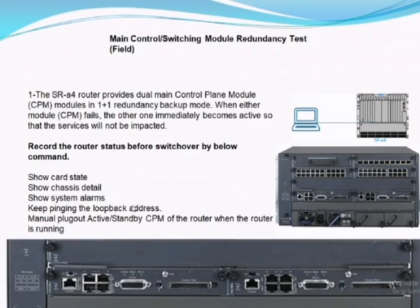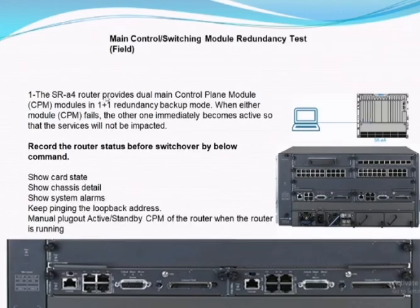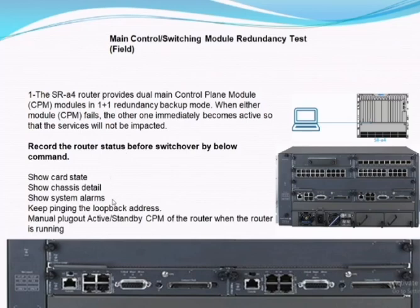It performs signal flow and processing functions for the whole router. We start the switching module redundancy test by applying commands: show cards, show chassis, show system alarms. We also keep pinging the loopback address as we manually eject the CPM card.